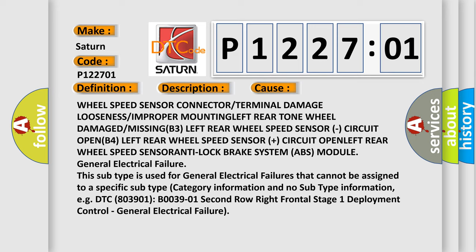Circuit open, left rear wheel speed sensor plus circuit open, left rear wheel speed sensor anti-lock brake system ABS module. General electrical failure: this subtype is used for general electrical failures that cannot be assigned to a specific subtype category information. For example, DTC 803901, B0039-01, second row right frontal stage 1 deployment control, general electrical failure.